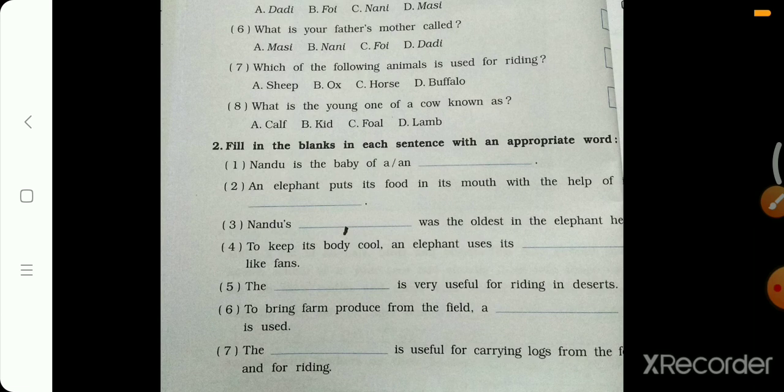The blank is very useful for riding in desert. Chalo, desert mein kiske upar riding ki ja sakti hai? Camel. Because camel can walk on sand. Desert mein sand hoti hai, toh woh uske upar chal paate hain. Toh uske upar hi riding ki ja sakti hai, right? That's why it is called the ship of desert.